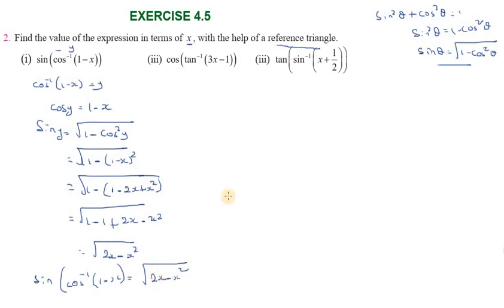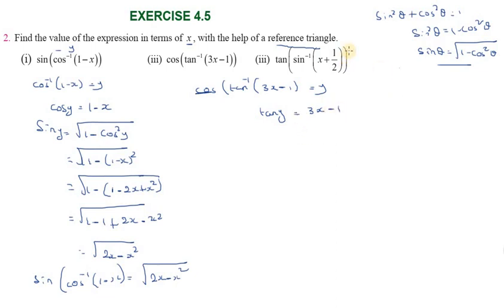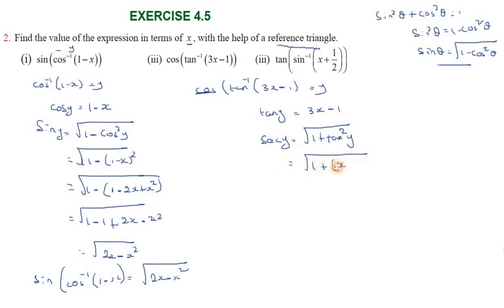In the second substitution, cos of tan inverse of (3x minus 1). Let tan inverse of (3x minus 1) equal to y. Then tan y equals 3x minus 1. Using the identity sec squared theta minus tan squared theta equals 1, we get sec y equals square root of 1 plus tan squared y.